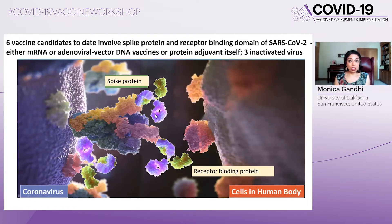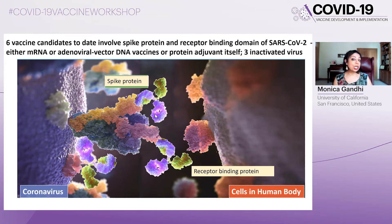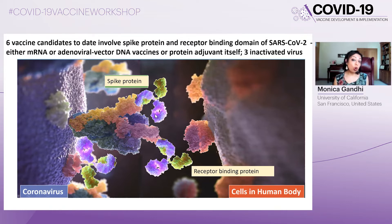Six of our vaccine candidates worldwide actually involve the spike protein — the protein that connects the virus to the host cell. Of those six candidates, five provide genetic material, either mRNA or DNA, that makes the body code for the spike protein. And one of them, the Novavax vaccine, actually involves injection of the spike protein with an adjuvant itself.